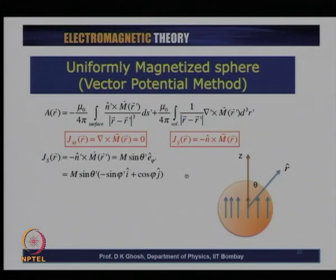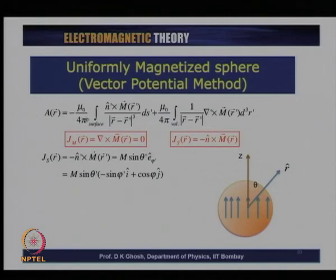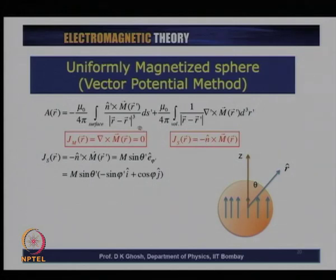In the next lecture, I will use the vector potential method to derive the same results. We take the expression for the vector potential and realize that because del cross M equals zero for uniform magnetization, we are left with only a surface quantity to work out. The vector potential method can also be used to obtain an expression for the magnetic field in this case.